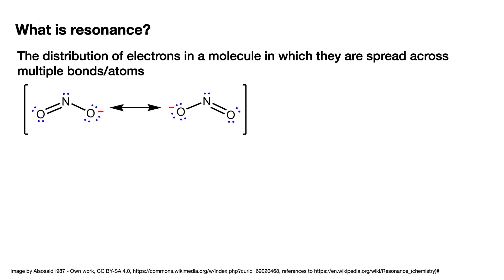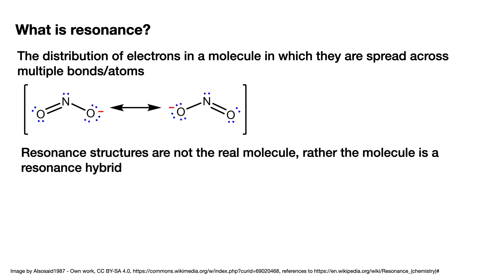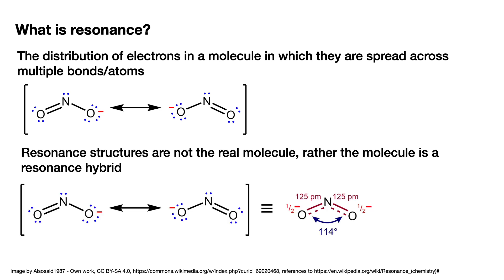Which is the real structure or the true structure? Neither of these. Resonance structures are not the real molecule. Rather, the real molecule is a resonance hybrid, which means it's a combination of the different resonance structures. We have the NO2 ion, and if we look on the right, it's essentially equivalent to this resonance hybrid, which we've indicated by using dashed lines for the electrons.